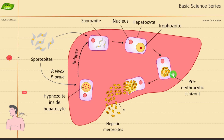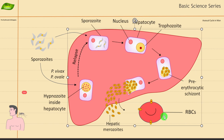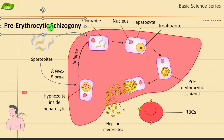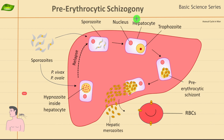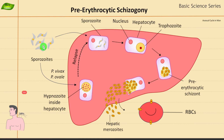The trophozoite got converted into a schizont, and then the schizont got converted into hepatic merozoites. What can happen next is they can target the RBCs, leading into the next stage of the life cycle which is erythrocytic schizogony. The liver is labeled in the illustration.